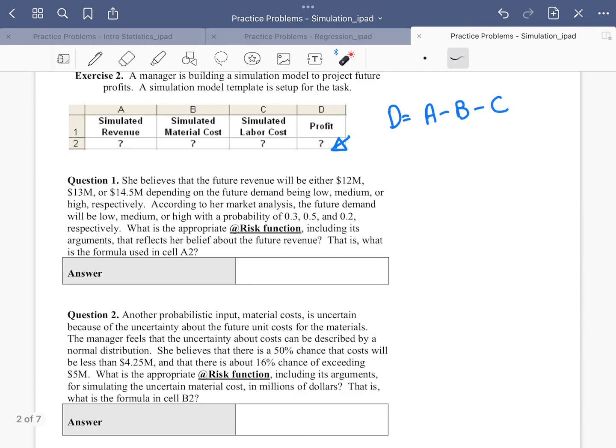Question one. The manager believes that the future revenue, so they're talking about cell A here, will be either $12 million, $13 million, $14.5 million, depending on the future demand. So if the demand is high, the revenue is going to be high as well.